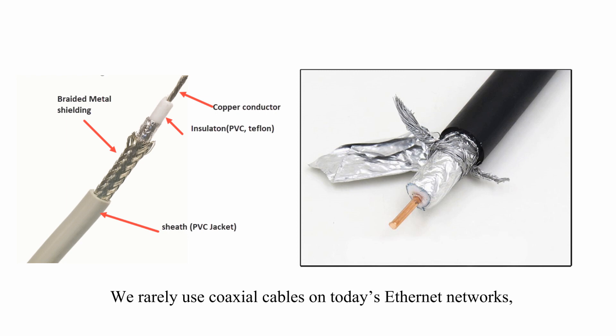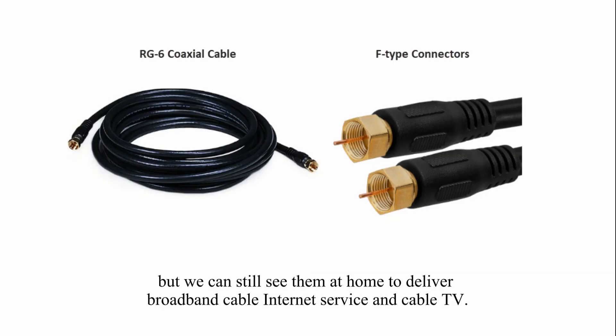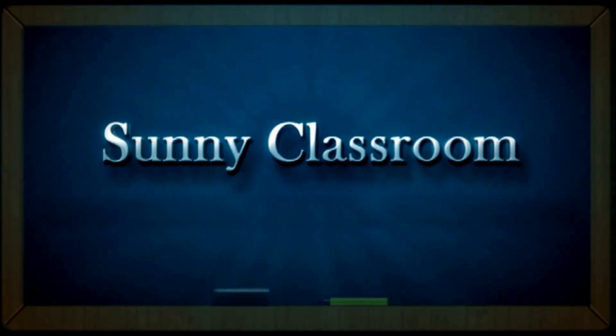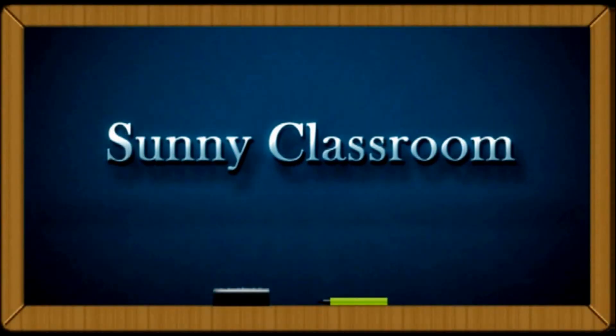We rarely use coaxial cables on today's Ethernet networks, but we can still see them at home to deliver broadband cable internet service and cable TV. The RG6 coaxial cable with F-type connectors is commonly used.